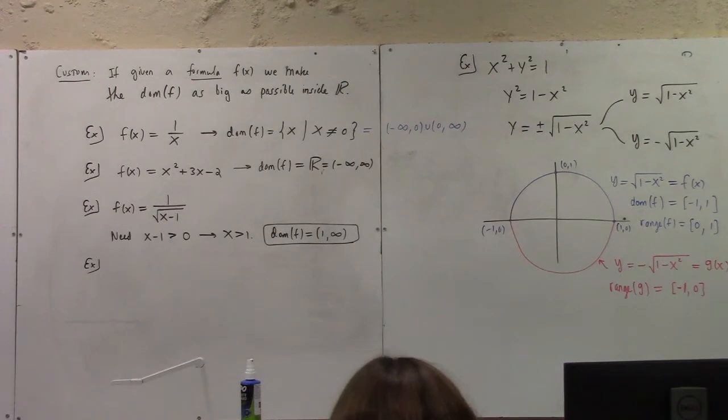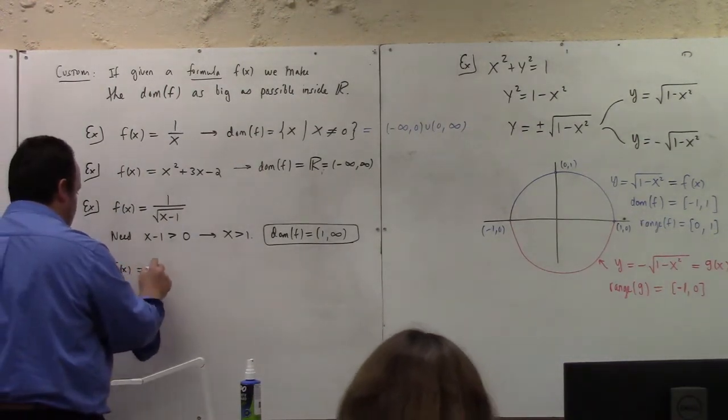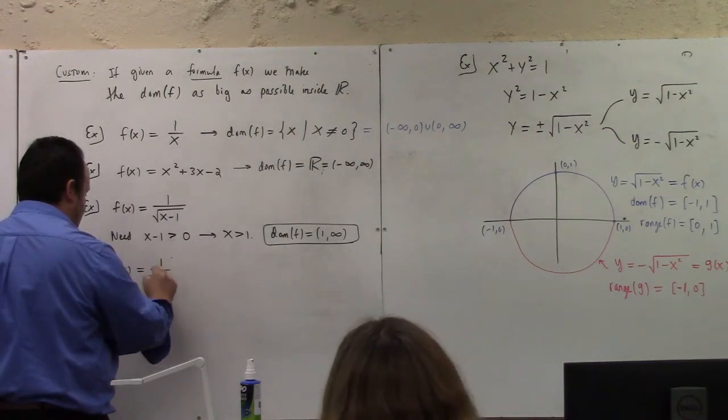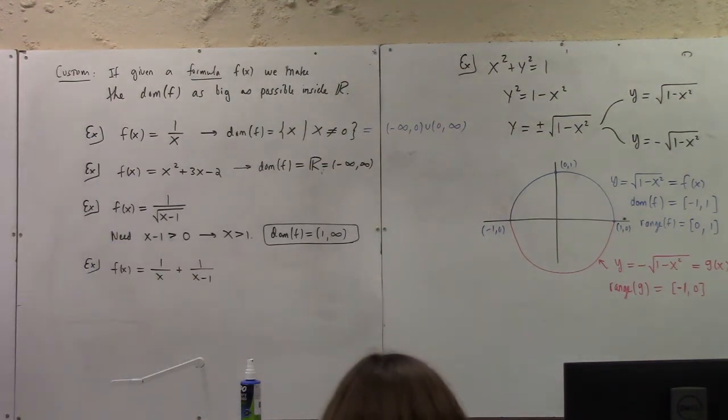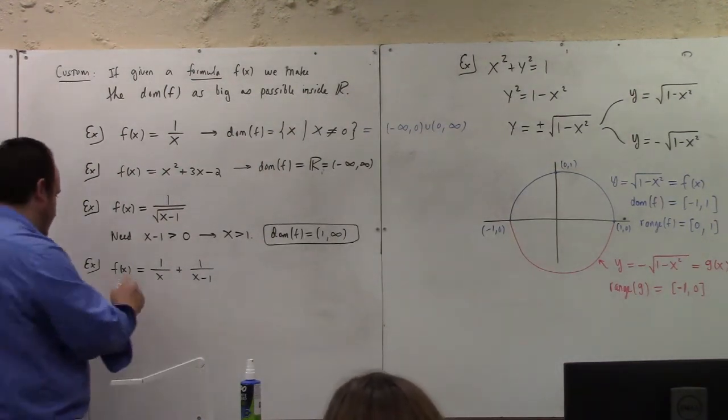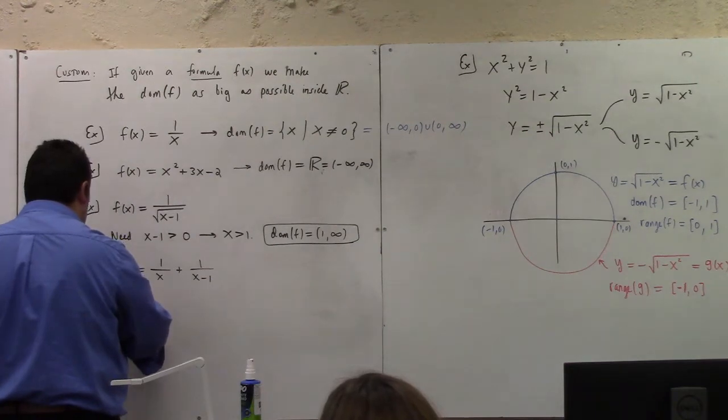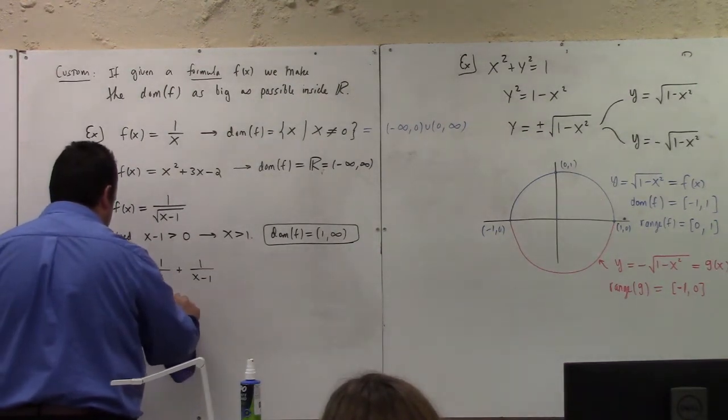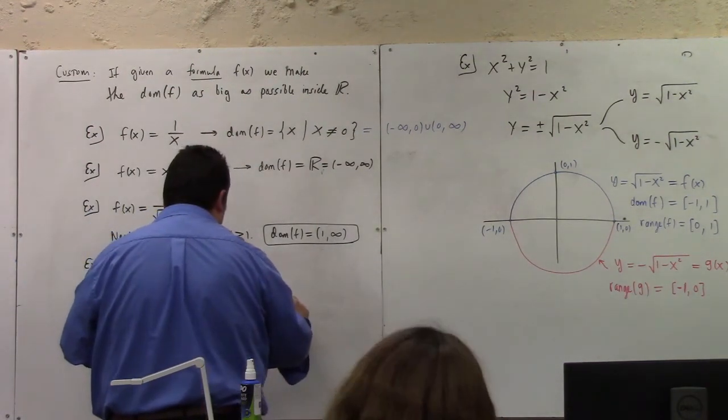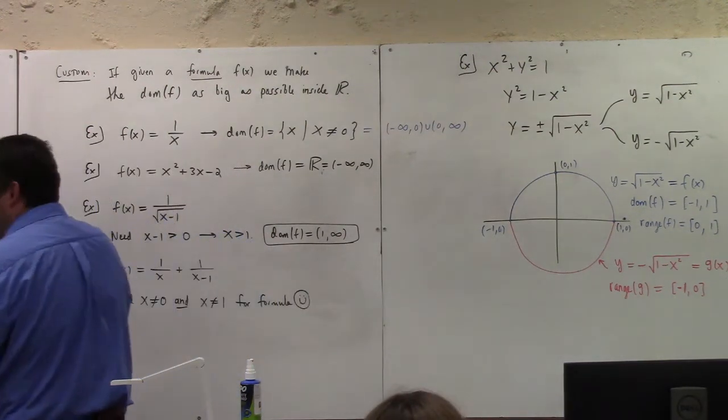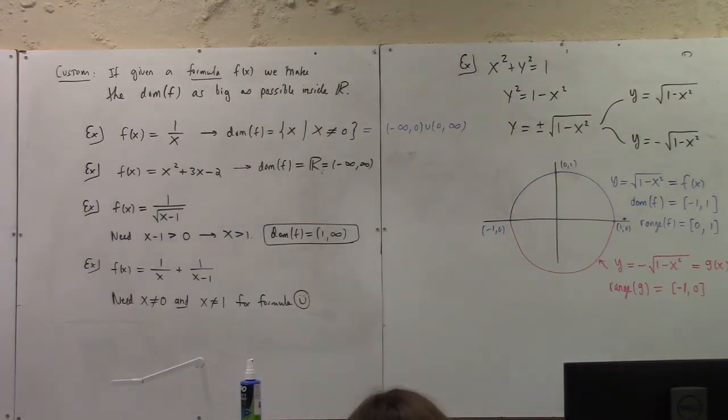Example. How about, what if we had something like f of x equals to 1 over x plus 1 over x minus 1? What would the domain of this one be? So we need what? We need x not equal to 0 and x not equal to 1 for formula happy.